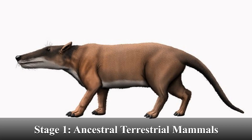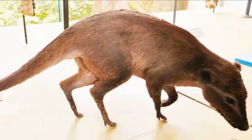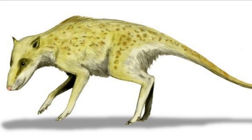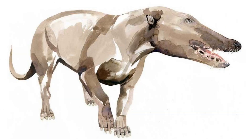Stage 1: Ancestral Terrestrial Mammals. Period: Early Eocene, 55 to 50 million years ago. The story of whale evolution begins with terrestrial mammals that lived on land. The ancestors of modern whales were likely small, four-legged creatures that resembled modern-day mammals. The transition from land to water would be driven by a combination of ecological and environmental factors.